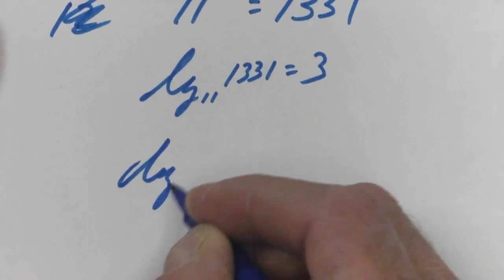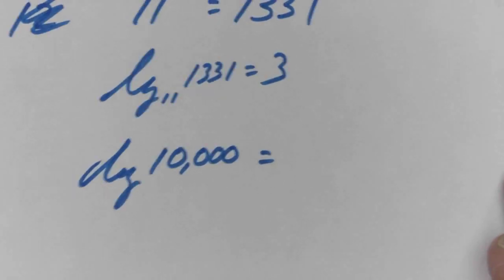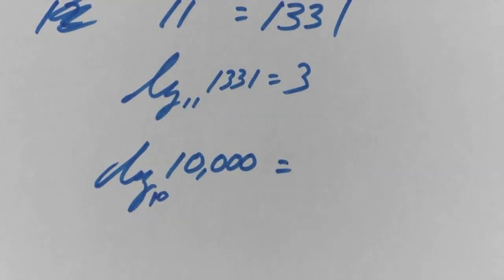For those watching at home, it'd be the log base 11 of 1331 equals three. So now, tell me what the log of 10,000 would be. Good. Guys, you've got an equation, but I want to know what that is. What's it equal to? It's equal to four. It's equal to the exponent. So your answer would be four. So now, some of you guys might have thought, oh my gosh, the base is gone. There is no base there. That's a 10. Does anybody remember what that's called when the base is 10? Common log. It's a common log.